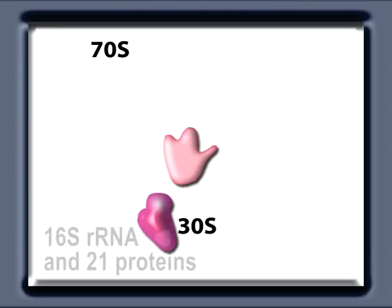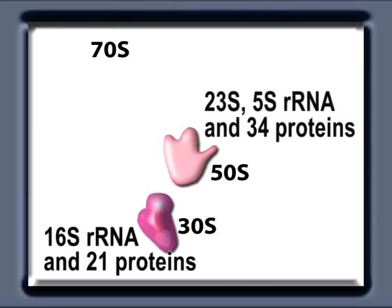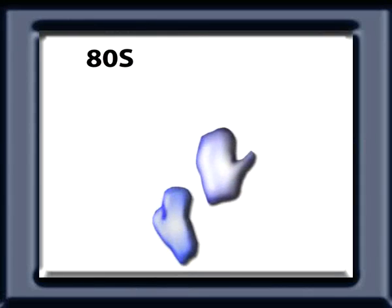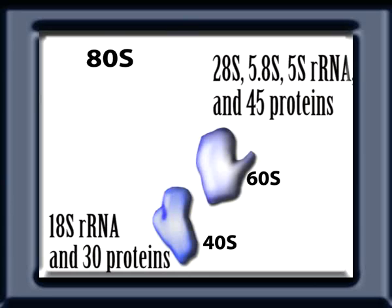The small subunit of prokaryotes, designated 30S, consists of 16S ribosomal RNA and 21 proteins, and the large subunit, designated 50S, is composed of 23S, 5S ribosomal RNA and 34 proteins. The subunits of eukaryotic ribosomes are larger and contain more proteins. The small subunit of eukaryotic ribosomes, designated 40S, is composed of 18S ribosomal RNA and approximately 30 proteins. The larger subunit, designated 60S, consists of 28S, 5.8S and 5S ribosomal RNA and about 45 proteins.